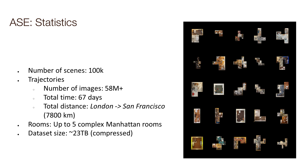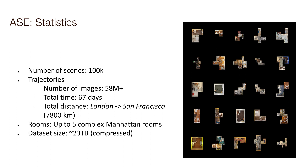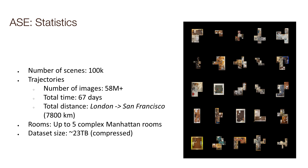Some statistics about the dataset: there are 100,000 scenes, and in each we simulate an agent walking around. There are 58 million images in the entire dataset. The simulated agents are walking for approximately 67 days total, and the total distance walked is about 7,800 kilometers - roughly the distance from London to San Francisco. Each scene has up to five complex-shaped rooms, all with a Manhattan world assumption, meaning walls connect at 90-degree angles. The dataset is approximately 23 terabytes compressed.